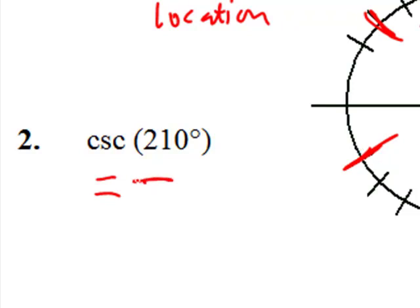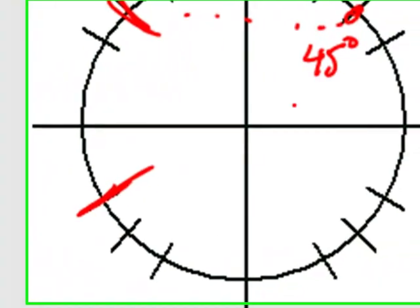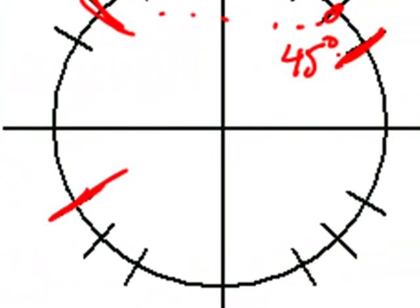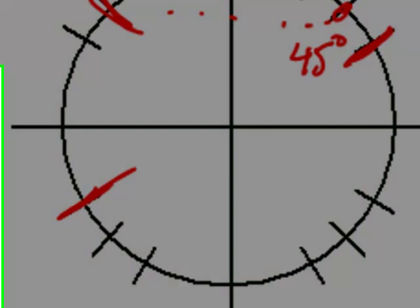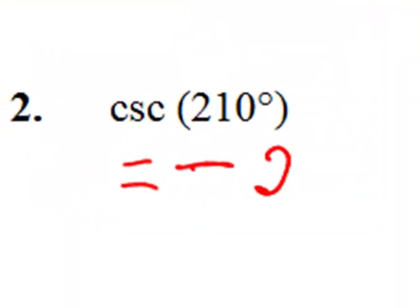Cosecant is negative. So let's see. 210 degrees is related to 30 degrees, and the cosecant of 30 degrees is 2. So this is negative 2.